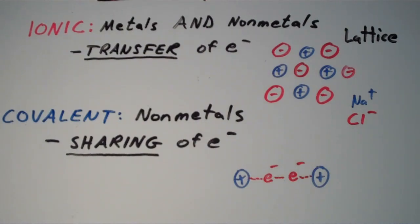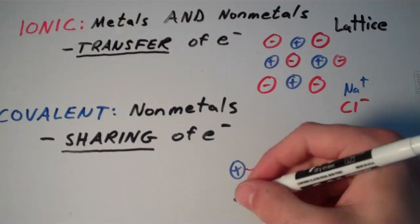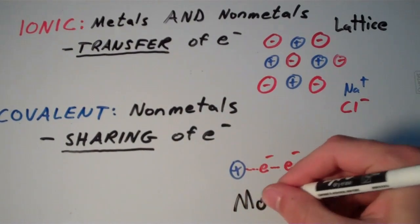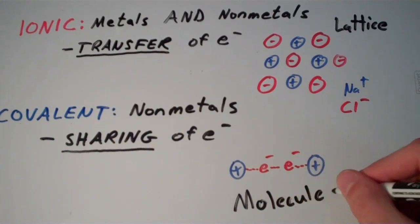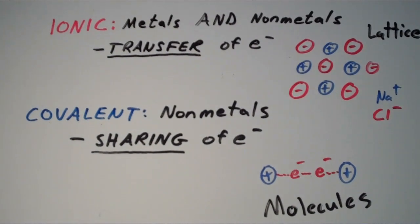But that's really not important for this video. This video is just meant to show the difference between ionic and covalent and what's actually going on at the atomic level. So the electrons anchor these positively charged nuclei into place and what results are what we call molecules. You might be familiar with this term.